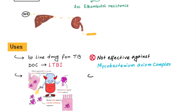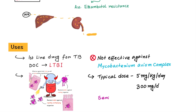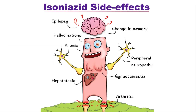The typical dose of isoniazid is 5 mg per kg per day, or 300 mg once daily. For serious infection and malabsorption cases, you can give 10 mg per kg per day. Now the most important things about isoniazid are its adverse effects.